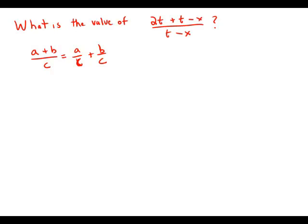So here what we have is 2t plus, and I'll write it over here, t minus x over t minus x. Well, I'm going to write that as 2t over t minus x plus t minus x over t minus x.